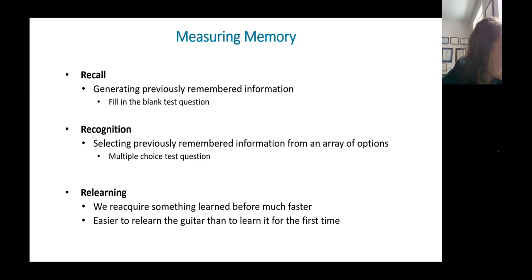The third way is called relearning. If you have learned something in the past, if you've learned to skate, it will be faster for you to learn it again a second time. So if you learned to skate as a kid, now you've been off the ice for 10 years, when you go back on the ice, you'll be pretty shaky, but you will learn it a lot faster than a first-time skater.